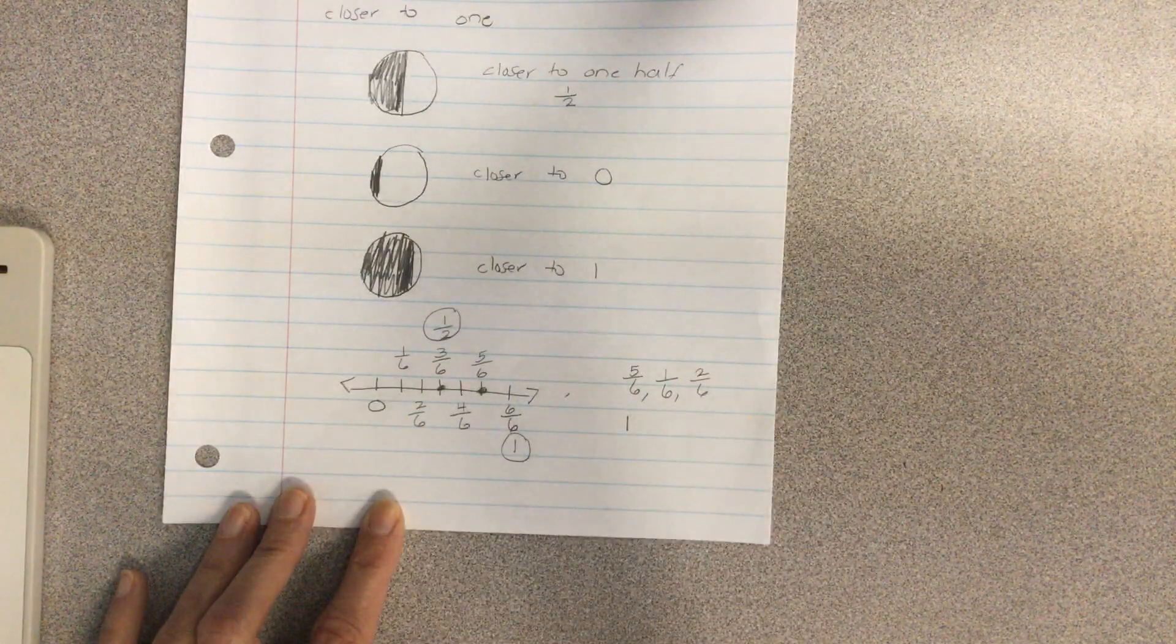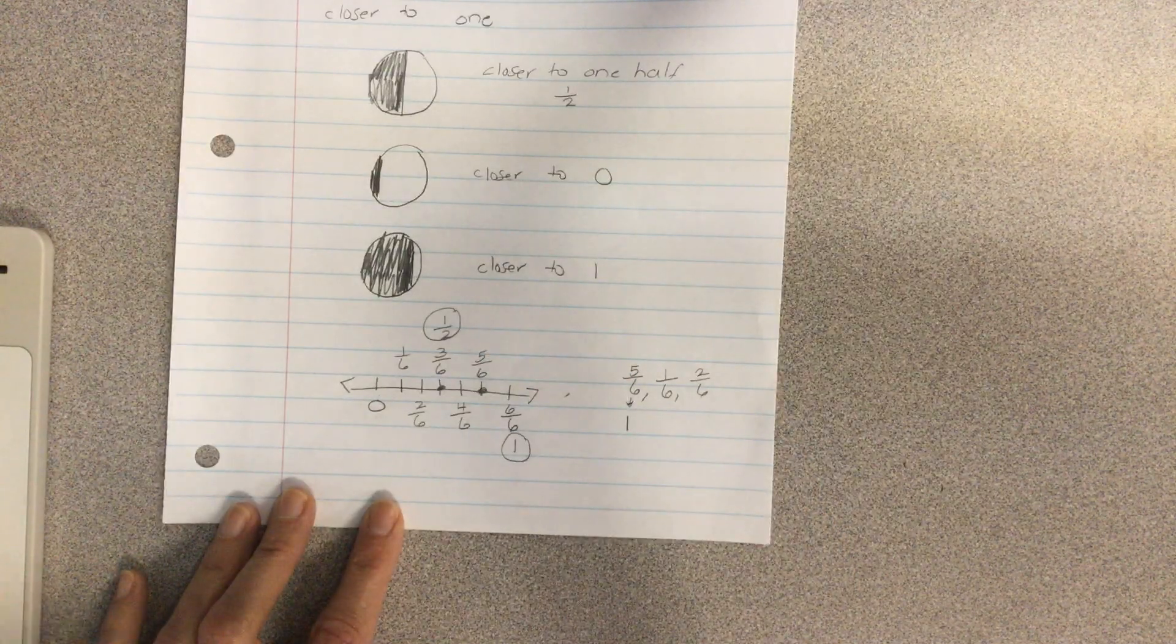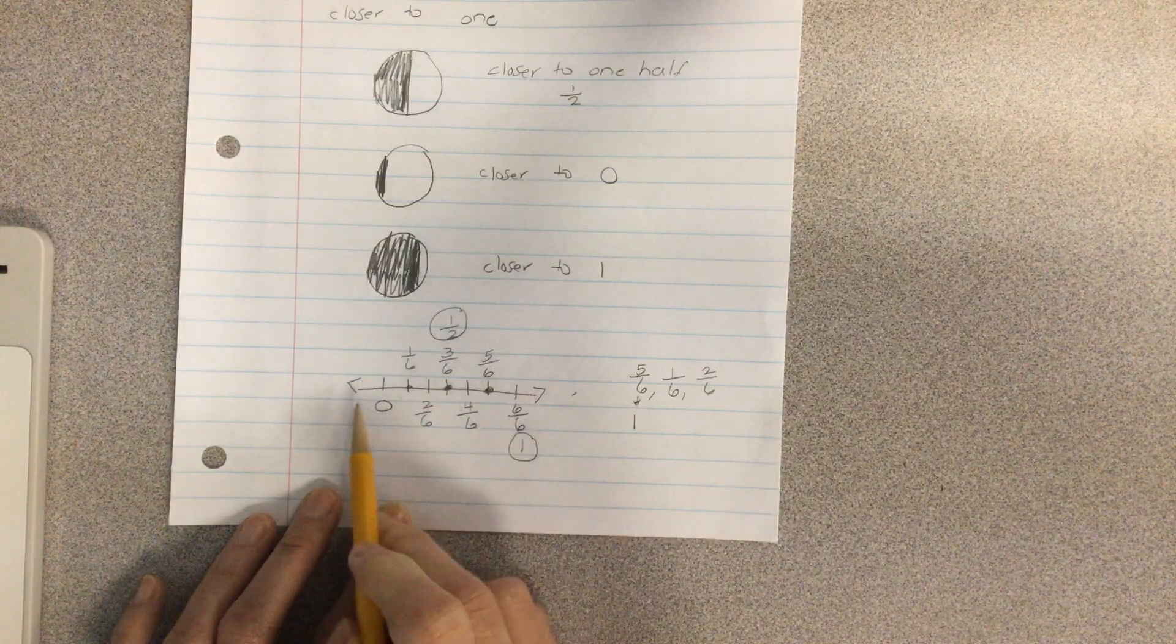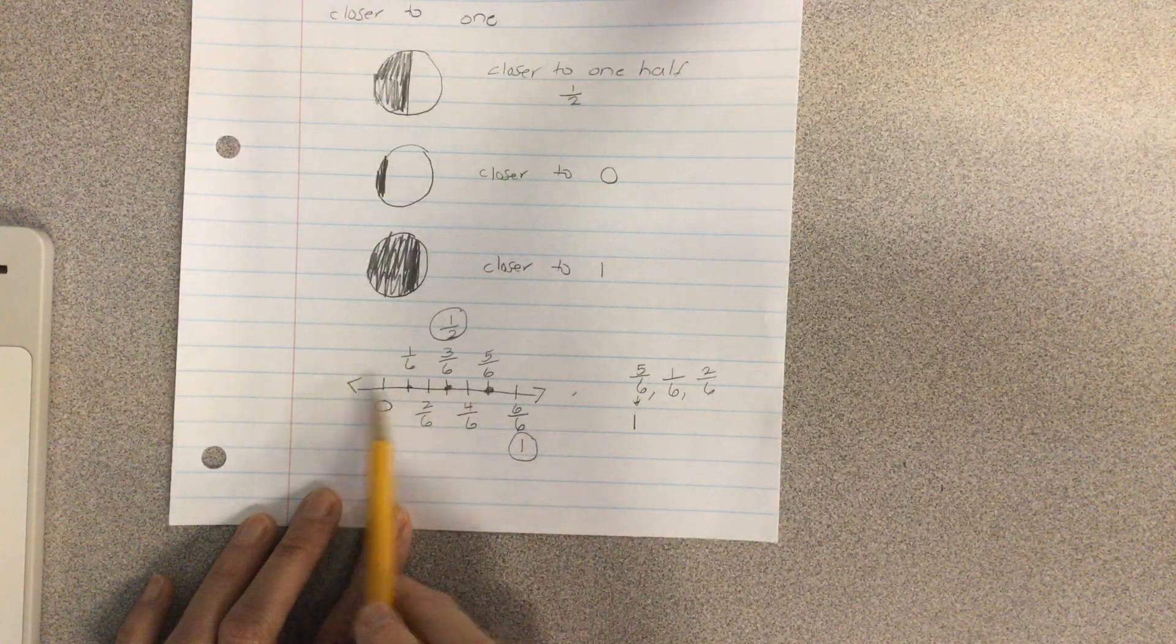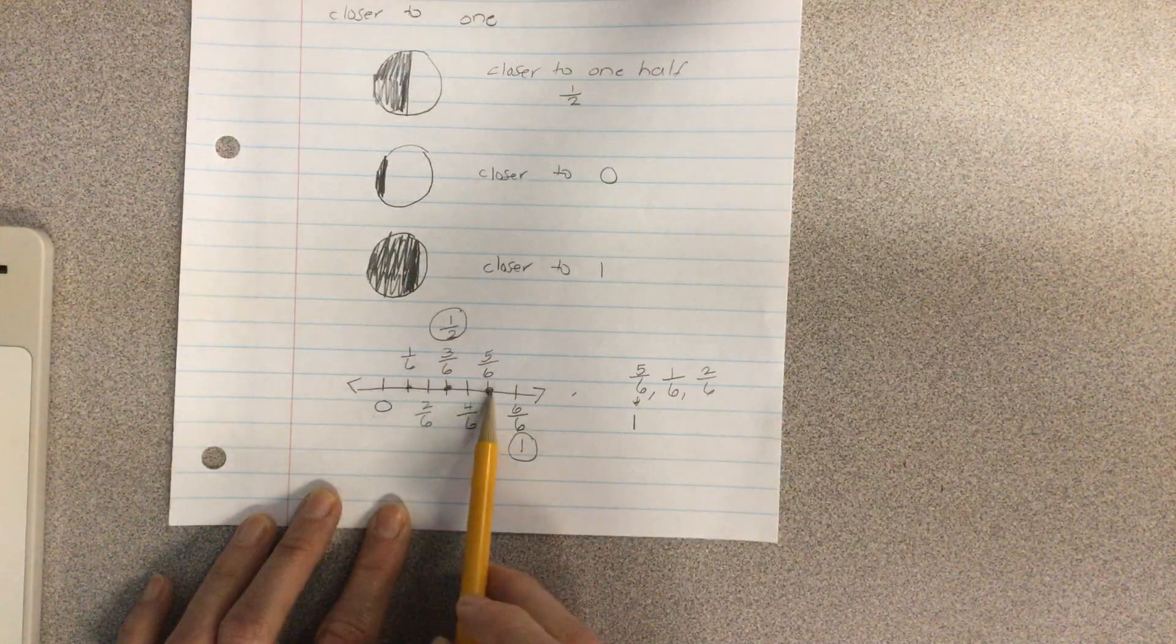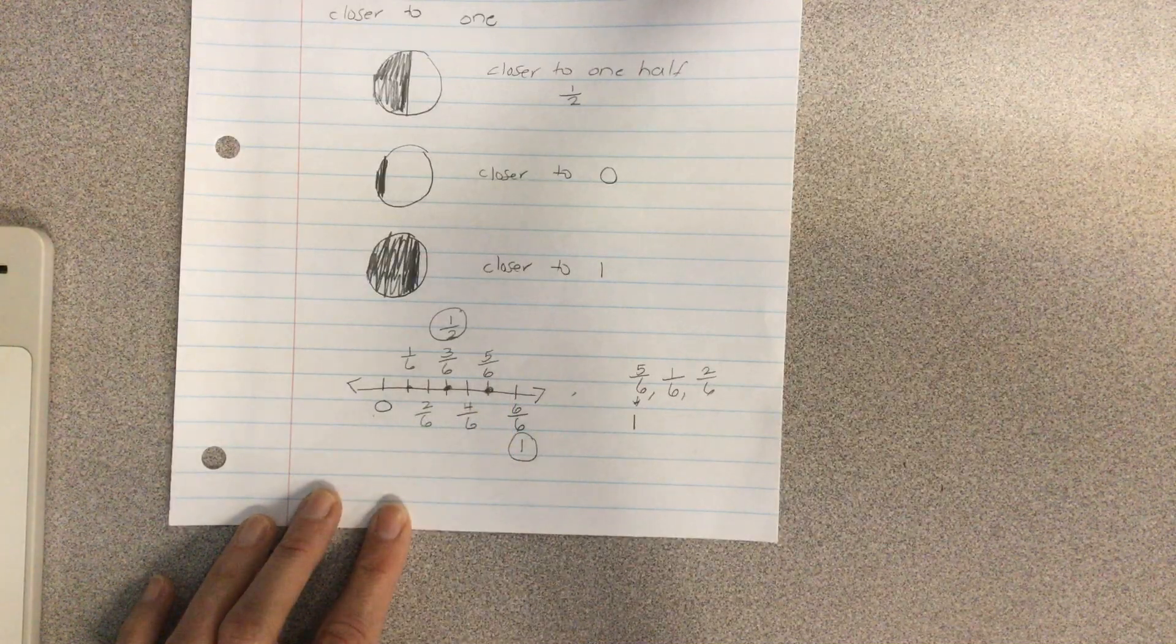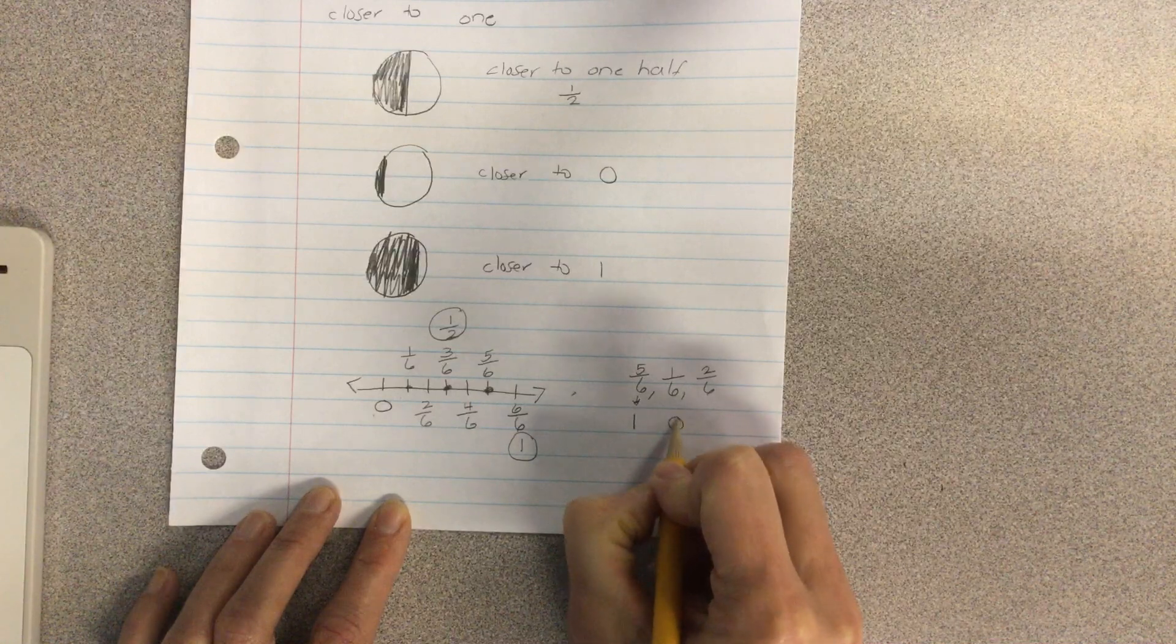We're just going to write that underneath of it. And I'll put a little arrow. Then one sixth is right here on our number line. Is it going to be closer to zero? It's one space away. Closer to one half? It's one, two spaces away. Or closer to a whole? It's one, two, three, four, five spaces away. Which means one sixth is closer to zero.